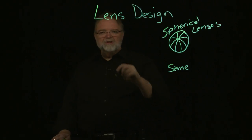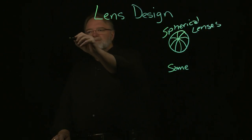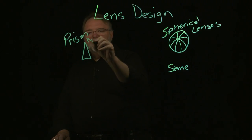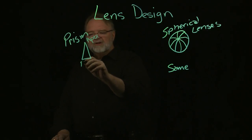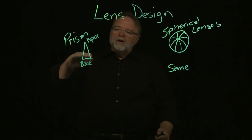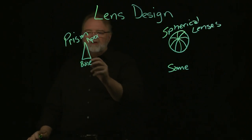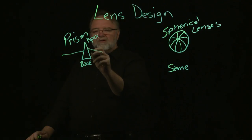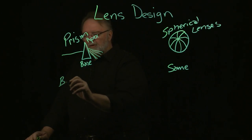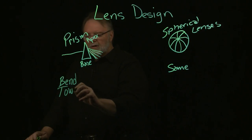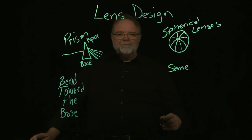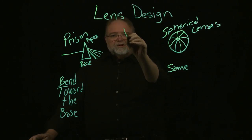There are two types of lenses, and we're going to talk about lenses in terms of prisms. With a prism, you have an apex, which is the point, and then you have the base. Notice the base is thicker. As light rays go through a prism, they bend towards or away from normal. Just like that old Pink Floyd album, the light rays scatter. Light rays going through a prism bend toward the base. So think of lenses in terms of prisms.